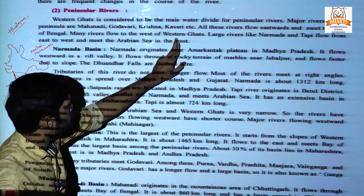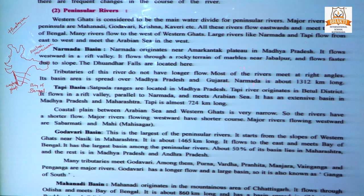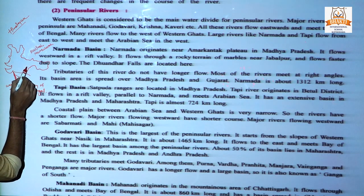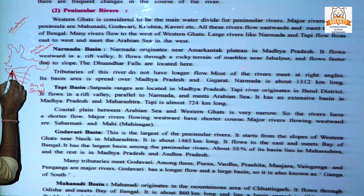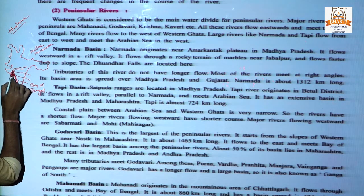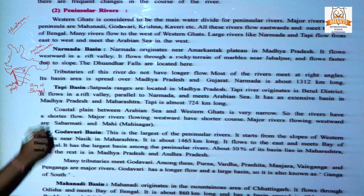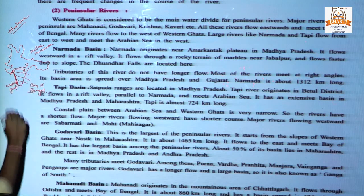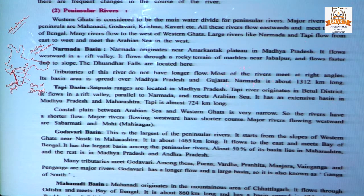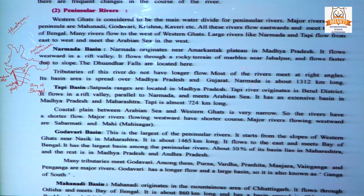Many rivers flow to the west of the Western Ghats. Only two rivers flow to the west of the Western Ghats — one is Narmada, which originates from Amarkantak, and the second is Tapi. Tapi originates from the Betul district of Madhya Pradesh, while Narmada originates from Amarkantak, Chhattisgarh. These two rivers flow westward and empty their water into the Arabian Sea.